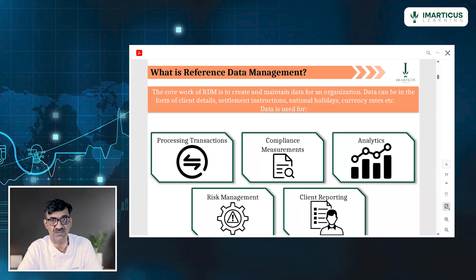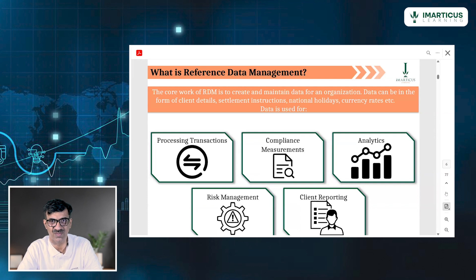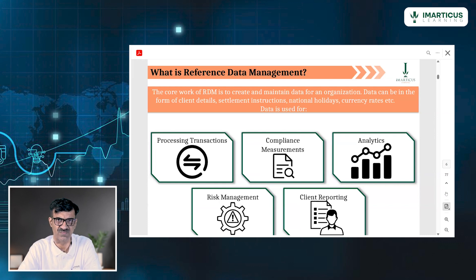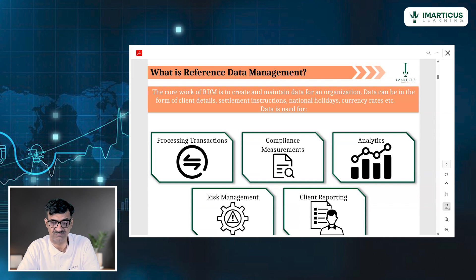Data is used for processing of transactions — from initiation of transaction to execution. Then there are compliance measurements. Whatever is told, we have to comply. Can we refuse? No. Compliance is a must. Compliance brings in a lot of positivity. Then there is analytics — analysis of data. Then there is risk management. Risk management does not mean eliminating the risk — it means minimizing the risk. If you can eliminate, nothing like it, but minimizing is a big thing because you save a lot of money for your organization. Then there is client reporting, which is a must for regulators.